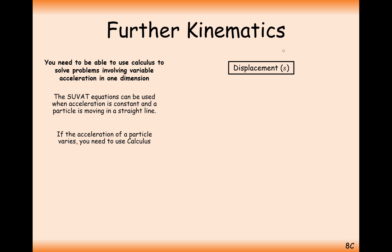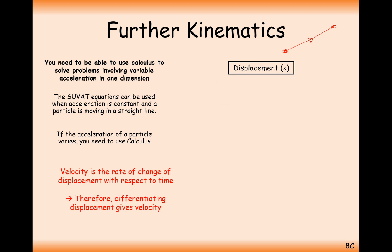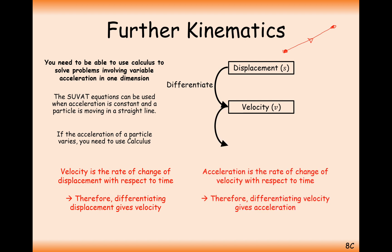Starting with displacement, if we consider the rate at which we are displacing our particle — the rate at which we are moving from one position to another — we're effectively considering the velocity. So the rate of change of displacement is equal to the velocity. Similarly, the rate of change of velocity is equal to acceleration. So if we differentiate velocity, we get acceleration. I like to remember it as the chain: S differentiates to V and V differentiates to A.